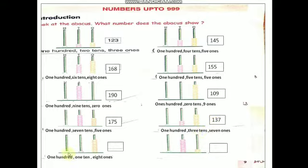Come to the next one. In the 100's place, 1 bead — so 100. In the 10's place, 1 bead — so 1 ten. In the 1's place, count children — 8 beads — so 8 ones. 100, 1 ten, 8 ones — so you have to write number 1, 1, 8. That is 118.